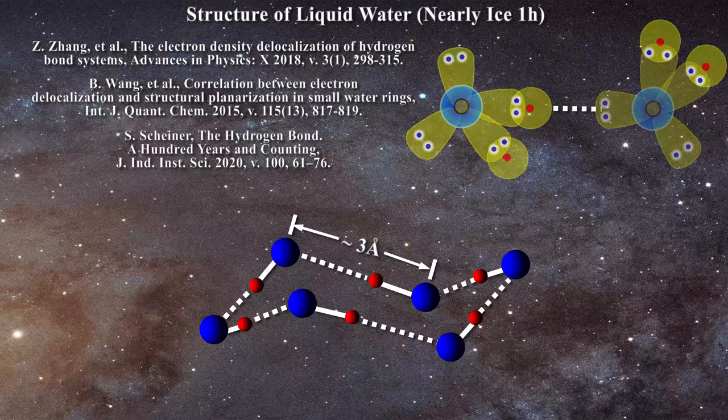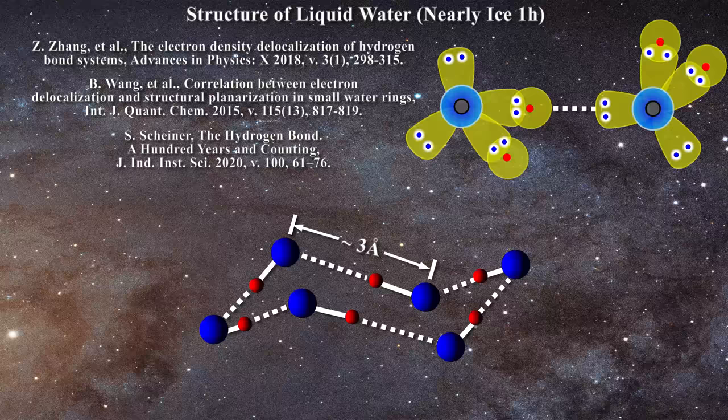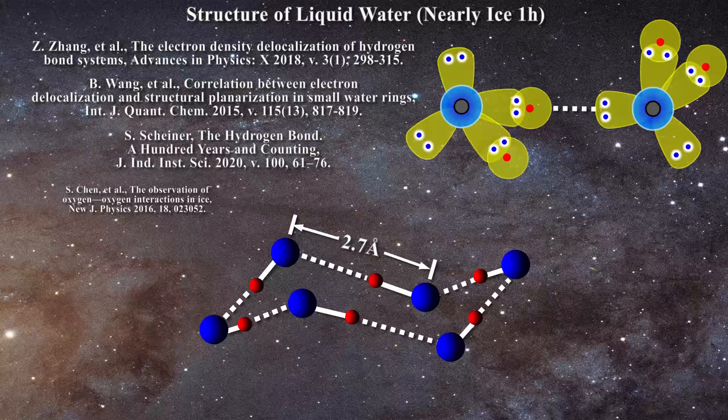One can gain more insight into this problem if one considers what happens when water molecules are compressed and the bonds made shorter. In water, the separation between adjacent oxygen atoms with an intervening hydrogen atom is actually about 2.7 angstroms, as one can learn here.